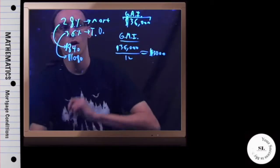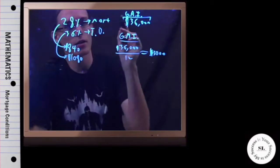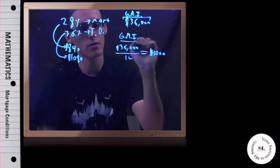Alright, now in this example, we are told that our gross annual income is $36,000, which really is the same thing as saying that your monthly income is $3,000.